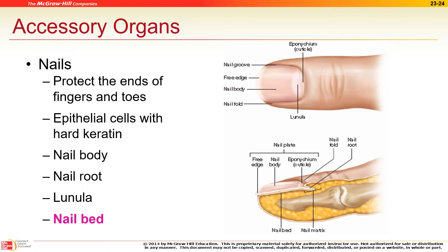Nails need the nail root to grow. If you slam your finger in a car door and the nail falls off, as long as you have the nail root, the nail will grow back — it might not come back pretty the first time, but it will return. The white area with no blood supply is the lunula; everywhere else where there's blood is the nail bed.